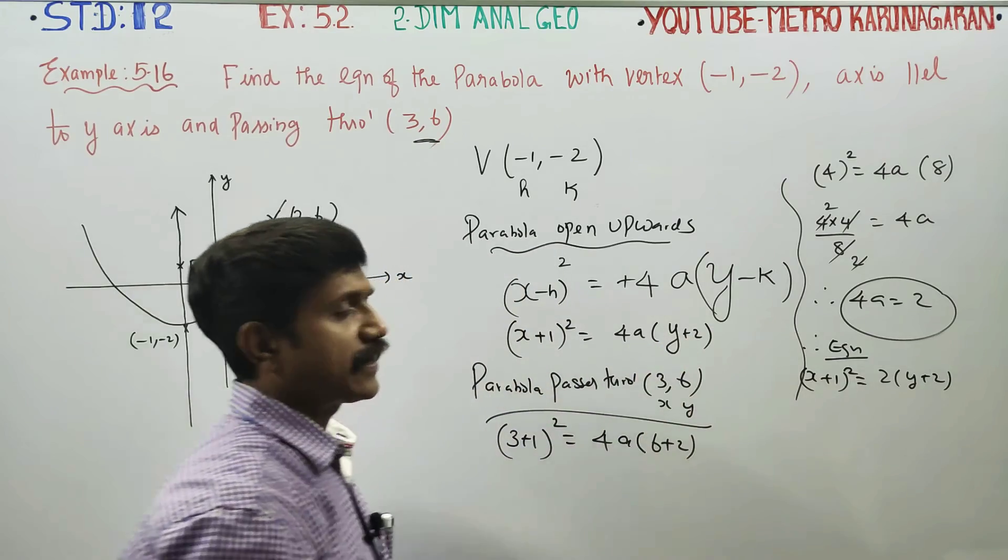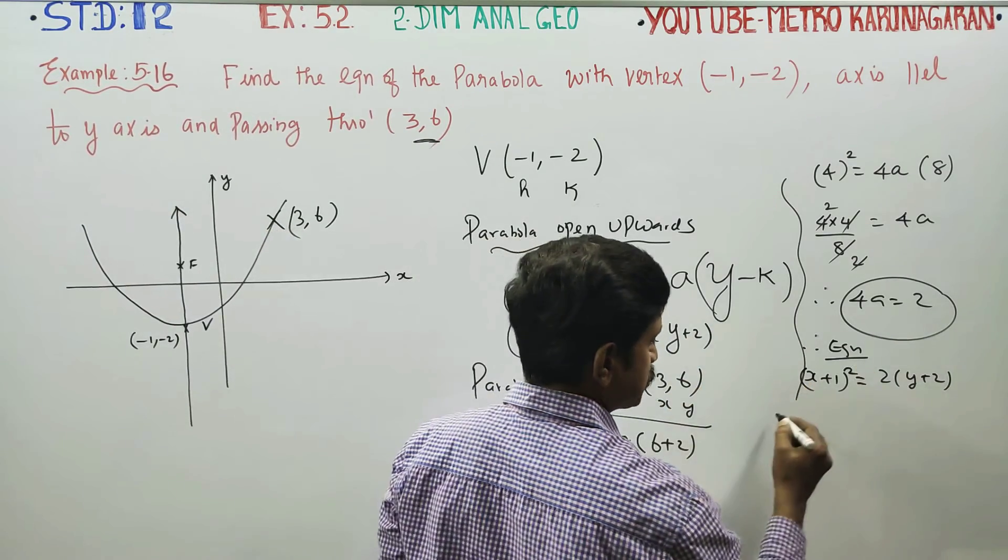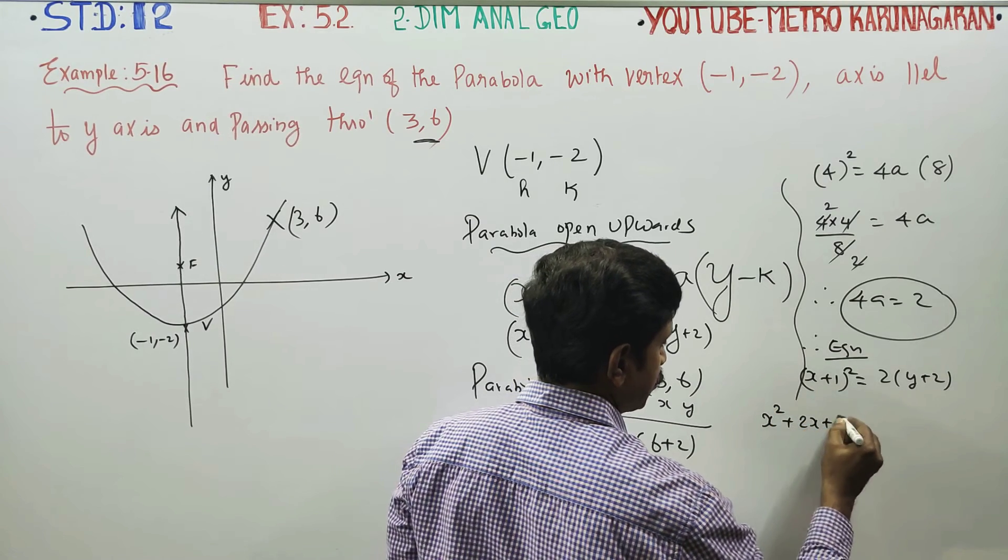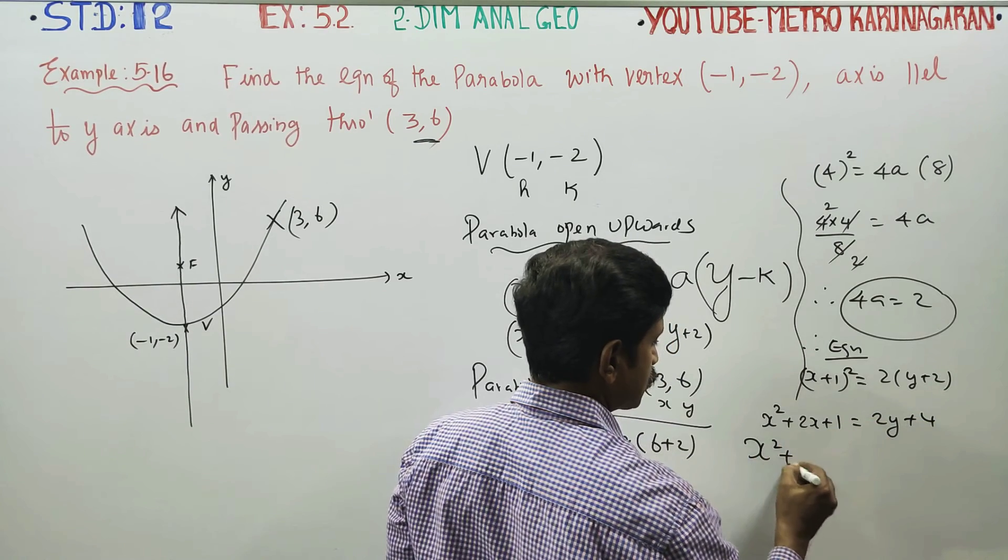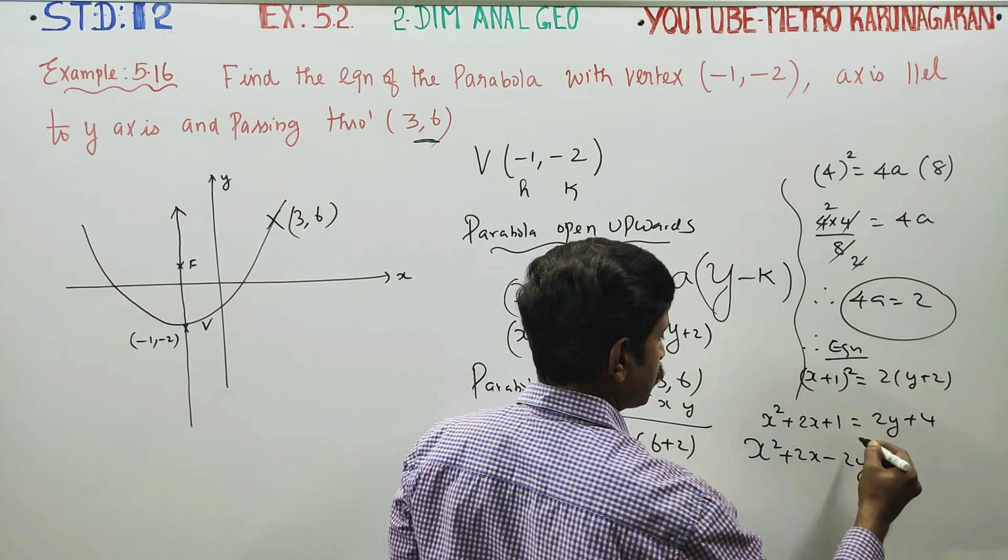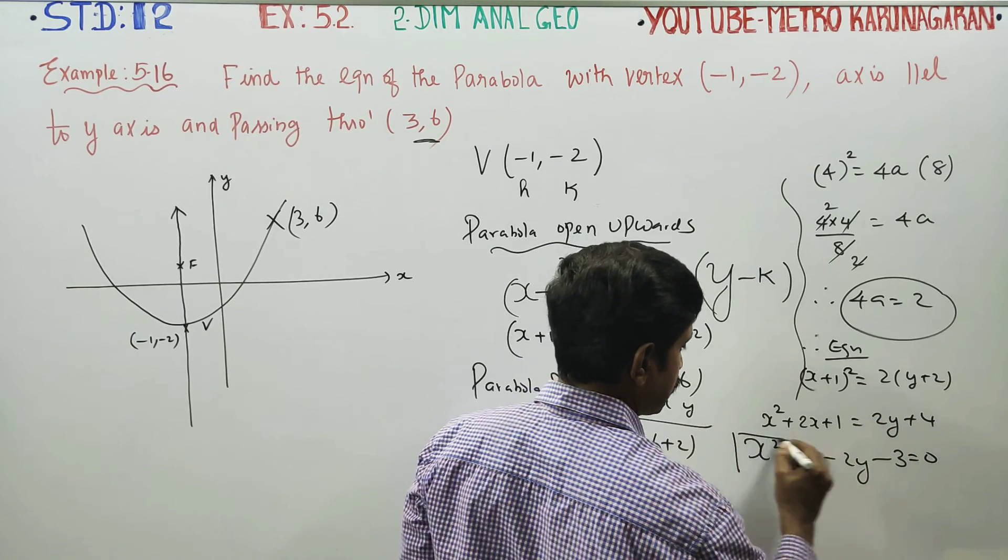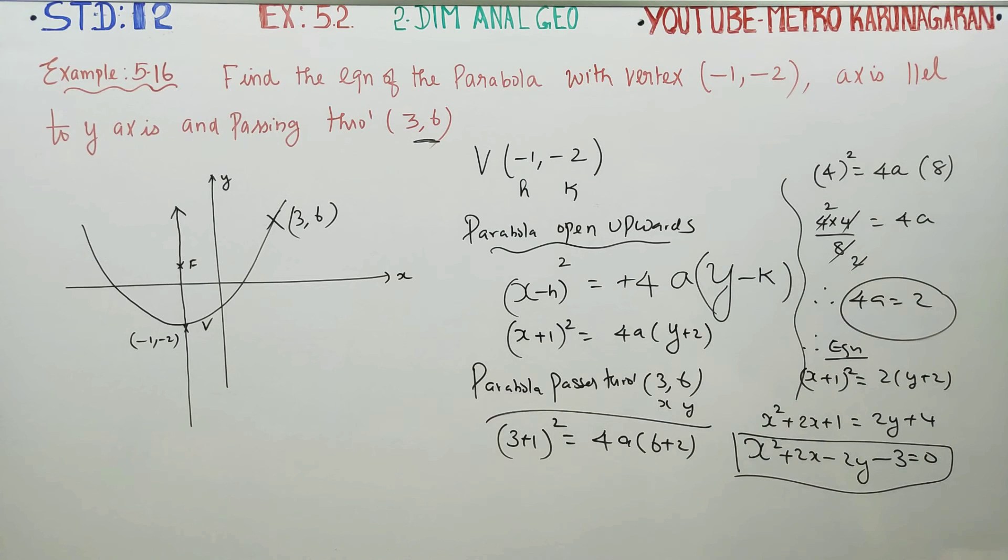Therefore equation is x plus 1 whole squared equals 2 times y plus 2. Using a plus b whole squared formula, a squared plus 2ab plus b squared, expanding gives x squared plus 2x plus 1 equals 2y plus 4. Bringing to one side: x squared plus 2x minus 2y plus 1 minus 4 is minus 3. This is your final answer: x squared plus 2x minus 2y minus 3 equals 0.